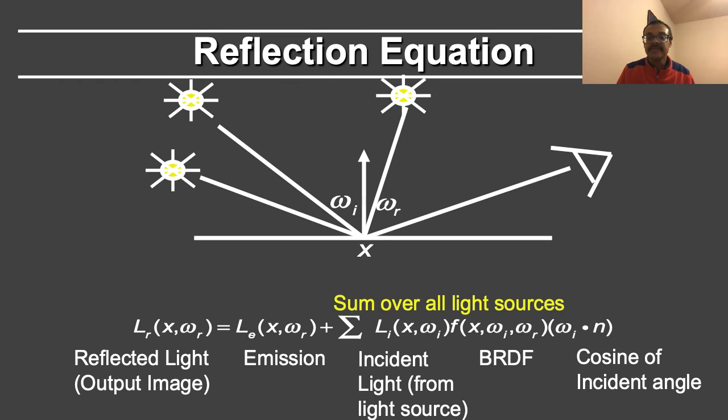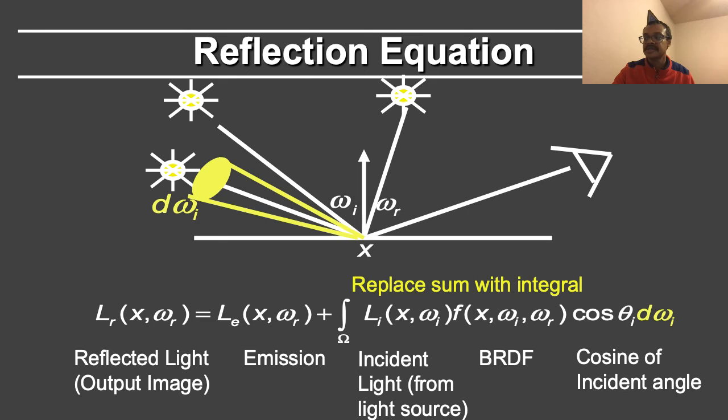If you have multiple light sources in the scene, you simply sum over all of the light sources, and as you integrate over an area light source or over the hemisphere, you replace the sum with an integral.